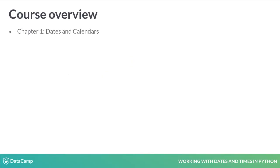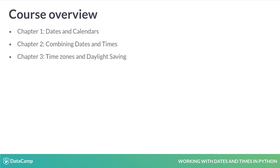This course is divided into four chapters. The first chapter will be about working with dates and calendars. In chapter two, we will add time into the mix and combine dates and times. In chapter three, we'll tackle one of the toughest parts of working with time: time zones and daylight saving. And finally, in chapter four, we'll connect what we've learned about working with dates and times to explore how pandas can make answering even complex questions about dates much easier.